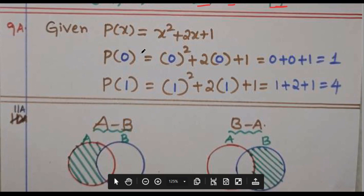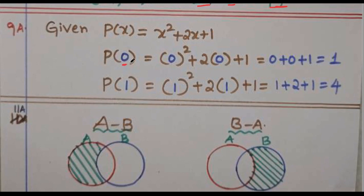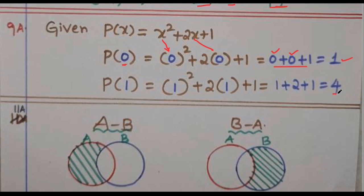Question 9: P(x) equals x squared plus 2x plus 1. For P(0), replace x with 0: 0 squared plus 2 times 0 plus 1 equals 0 plus 0 plus 1 equals 1. For P(1): 1 squared plus 2 times 1 plus 1 equals 1 plus 2 plus 1, which is 4.